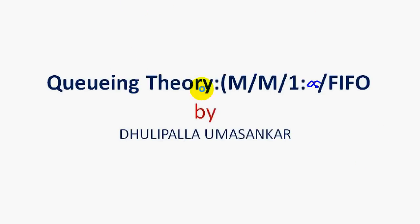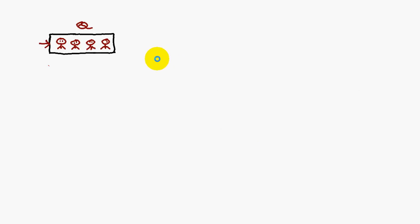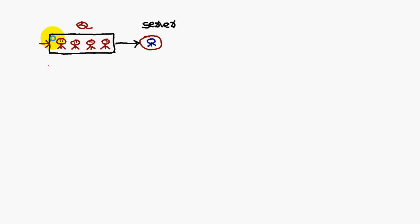Today we are going to discuss queuing theory in probability and statistics. Let us consider a hospital in which patients are waiting in a queue — first patient, second patient, third, fourth. This you call a queue. There should also be a doctor in the hospital who treats the patients; this you call the server. So this is the queue and this is the server. Lambda is the arrival rate of the patients.